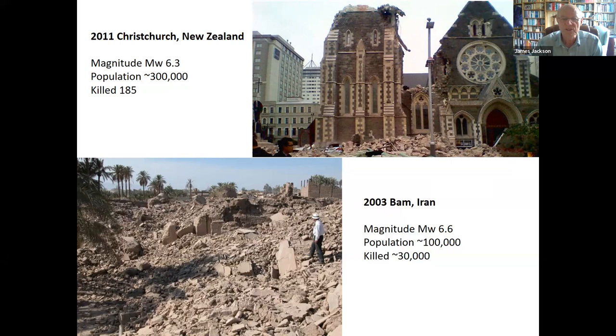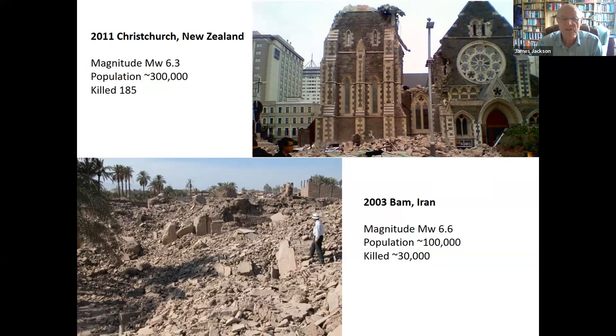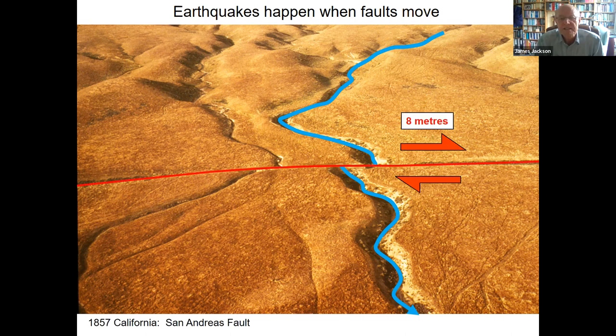The only bit of geology you need to understand is that earthquakes happen when faults move. Faults are where rocks break and slide past each other. In this picture just outside Los Angeles, you can see a river offset sideways about 8-10 meters — that sideways movement happened in the 1857 earthquake on the San Andreas Fault, which slid sideways about 8 meters over two or three hundred kilometers. It's the vibrations as rocks slide past each other that cause the shaking and make the earthquake.